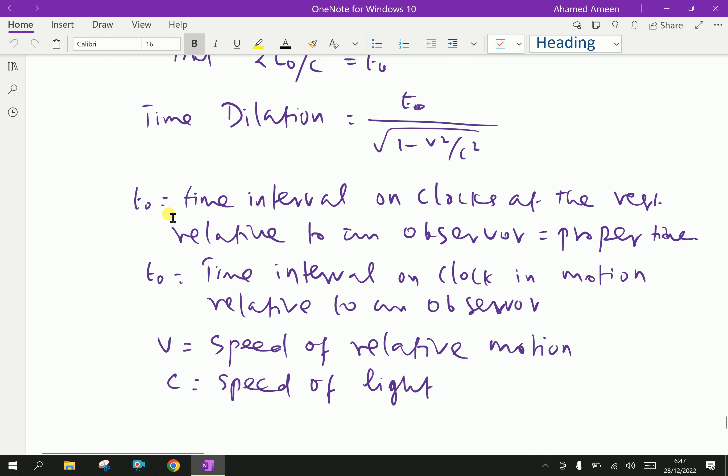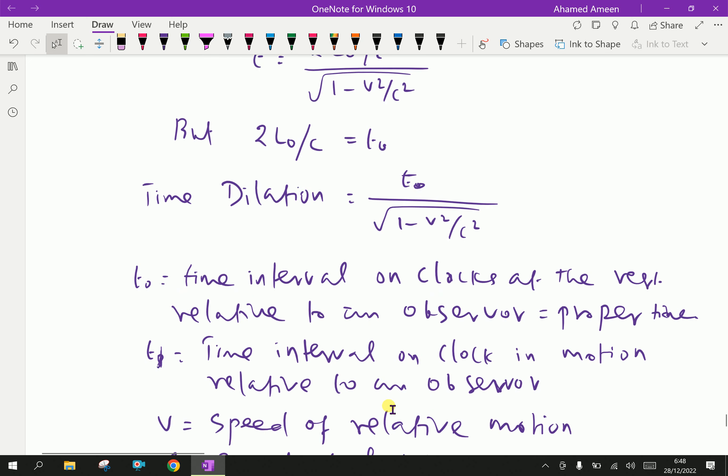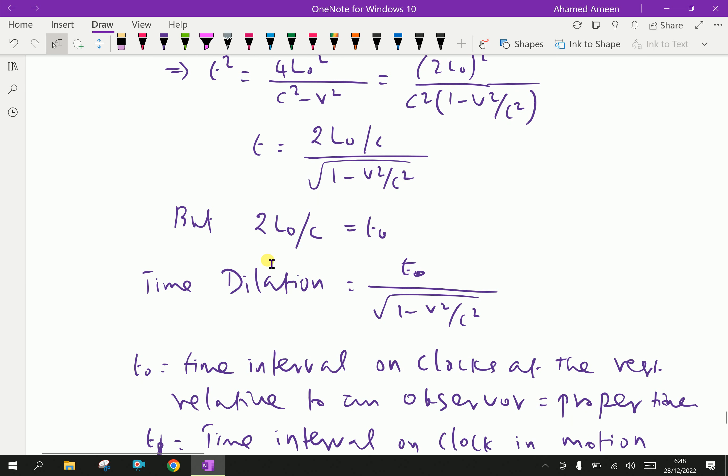And for that, T zero is a time interval on clocks at rest relative to an observer. That is, a proper time. Then, T is time interval on clock in motion relative to an observer. Here, not T zero, it's T. Let V equal speed of relative motion and C equal to speed of light. Therefore, T equal, this is the formula.